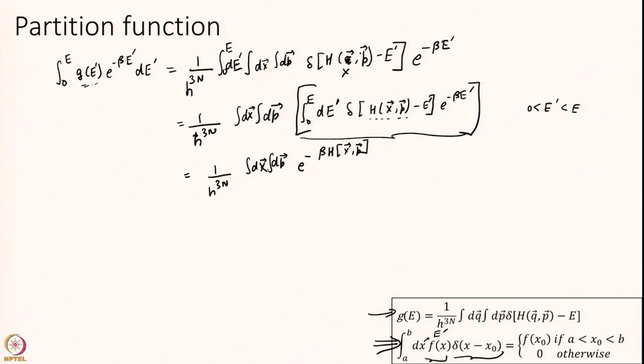Now what is this integral equal to, anybody remember still? What is it? Partition function. So integral from 0 to E, G E prime e to the power of minus beta E prime dE prime is equal to Q.